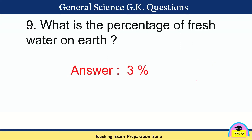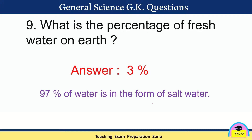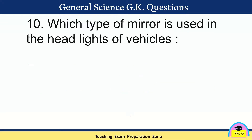What is the percentage of fresh water on Earth? The answer is only three percent. Just three percent of water on Earth is fresh water. The remaining 97 percent is in the form of sea water or ocean water — that is, salt water.